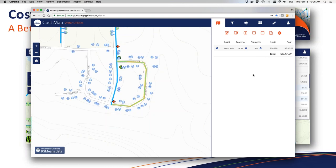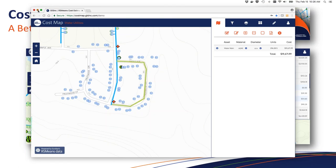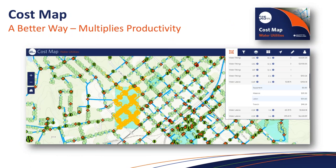Thanks, Steve — great demo. If you think about how you're doing cost estimates today, all water utilities and public works departments dealing with water are involved in some form with cost data, and it can be a laborious process. Now everybody can see the productivity gain by doing it through GIS. Let's take a look at the product roadmap — here's where we are today and where we're going with COSTMAP in 2018.